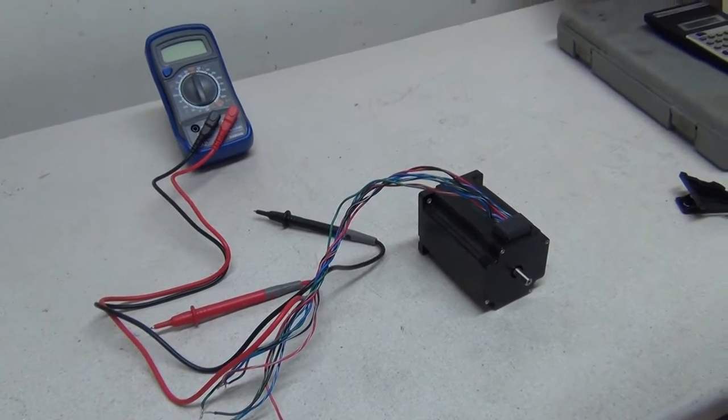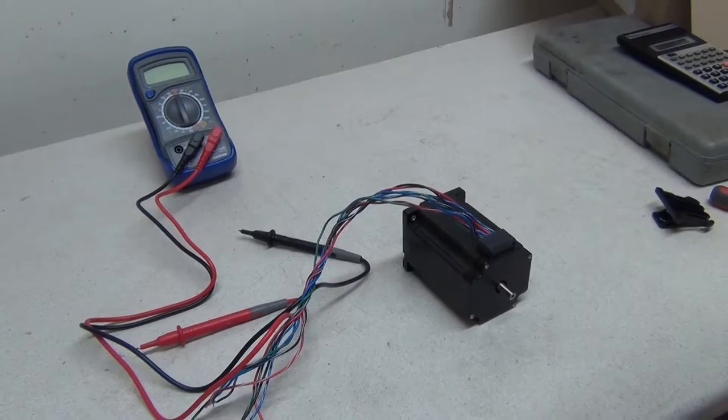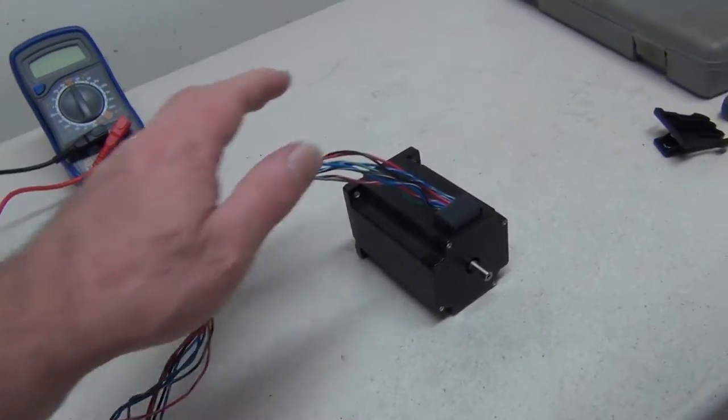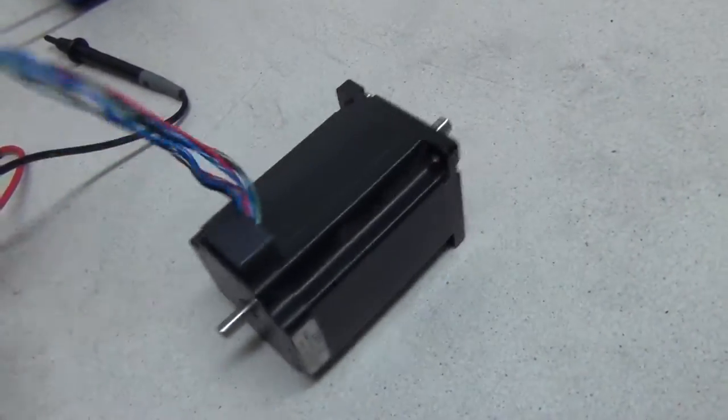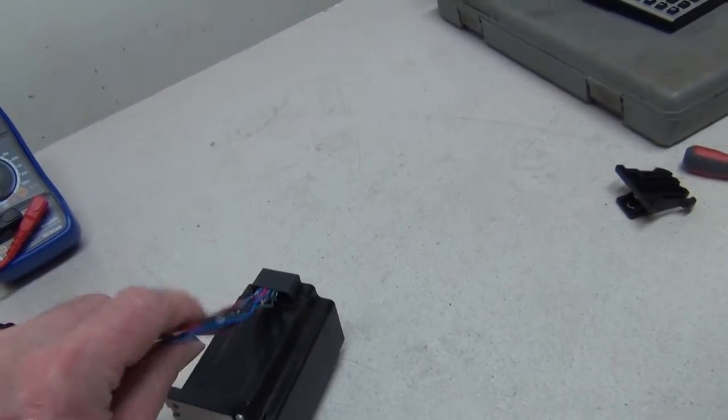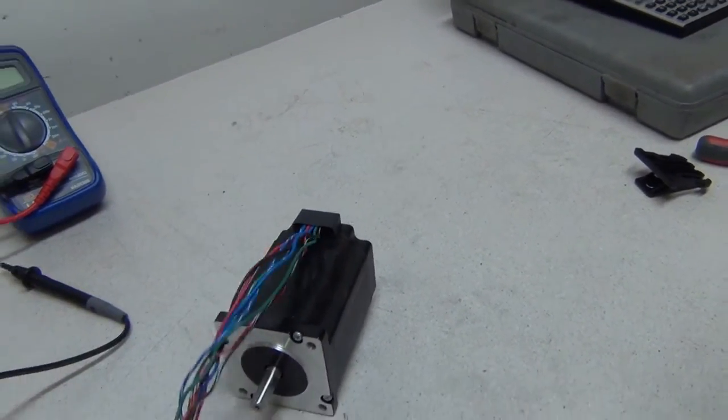Right, we're going to have a look at an eight-wire stepper motor and how it connects up. Let's have a quick look at the wires and see what we've got. We've got eight wires coming out of the motor. I'm working one-handed here, so I'm gonna put the camera down for a sec.